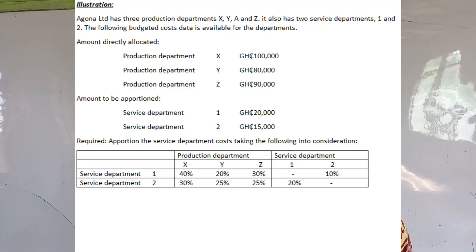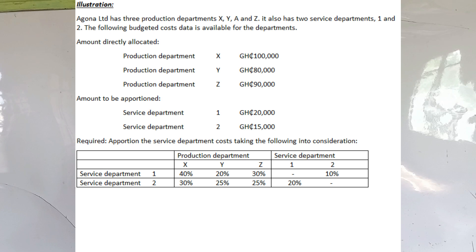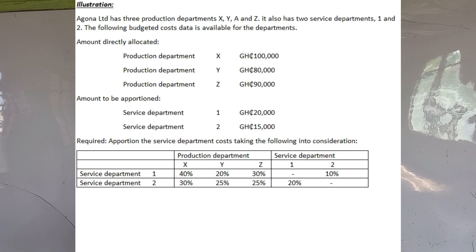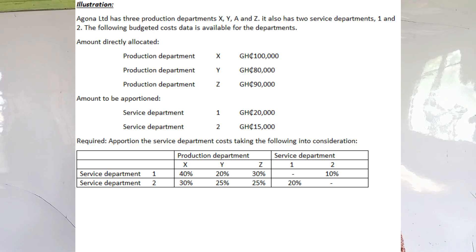If you have service department one benefiting from two and service department two benefiting from one, then it's a reciprocal service. For service department one, X gets 40%, Y gets 20%, Z gets 30%, and service department two gets 10%. For service department two, X gets 30%, Y gets 25%, Z gets 25%, and service department one gets 20%.